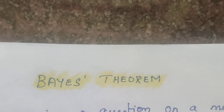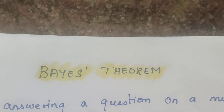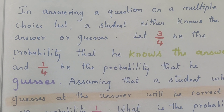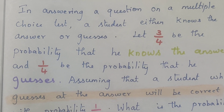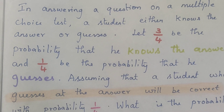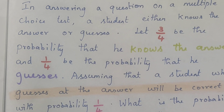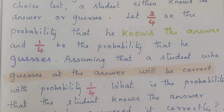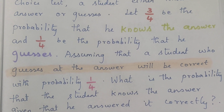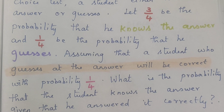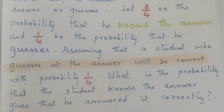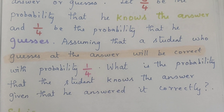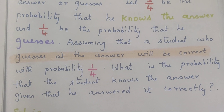Hello guys. This is the Bayes theorem problem. The probability that a student knows the answer is three-fourths, and the probability that he guesses is one-fourth. Assume that the student who guesses at the answer will be correct with probability 1 by 4. What is the probability that the student knows the answer given that he answered it correctly?